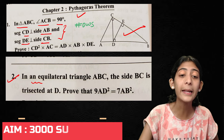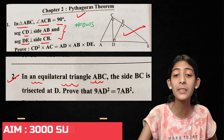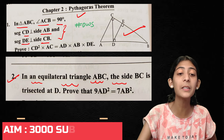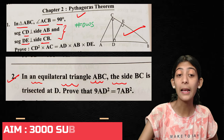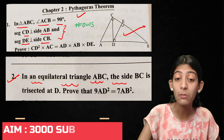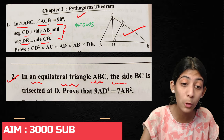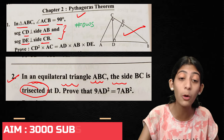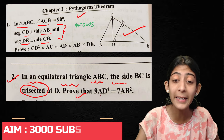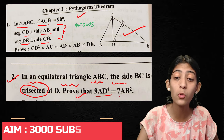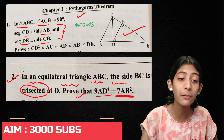Third question: In an equilateral triangle ABC, side BC is trisected at D. Highlight the main word — trisected. Prove that 9AD² = 7AB². This is all you have to prove.